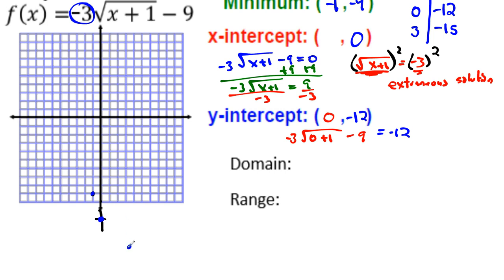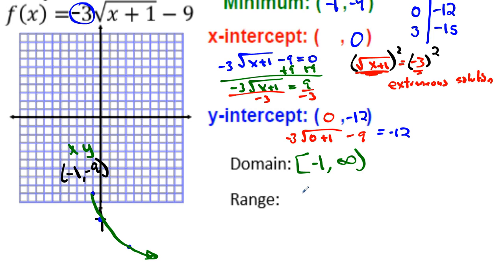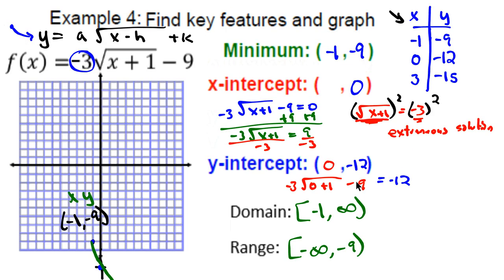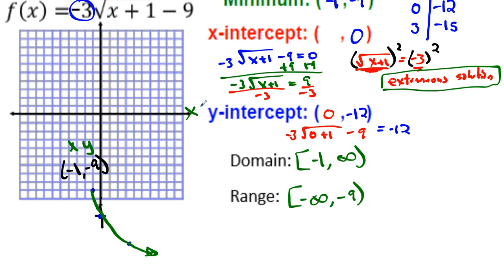The graph opens downward from the vertex. For domain: starts at x = −1 going to positive infinity, [−1, +∞). For range: since the graph opens down, the vertex (−1, −9) is the maximum, so range goes from negative infinity up to −9: (−∞, −9]. The x-intercept doesn't exist — it was extraneous — and the graph confirms it never crosses the x-axis.